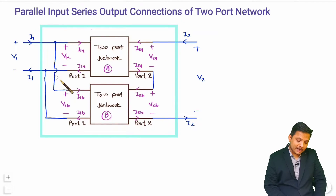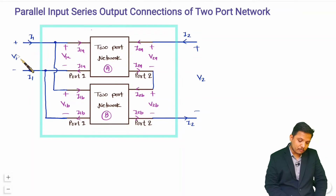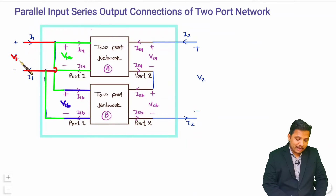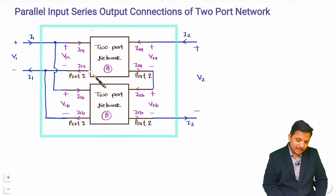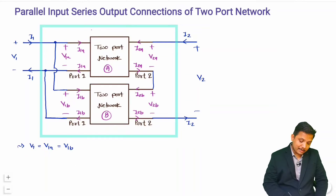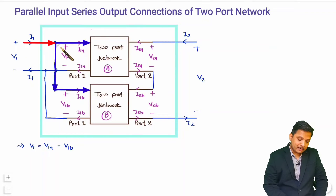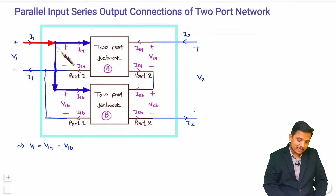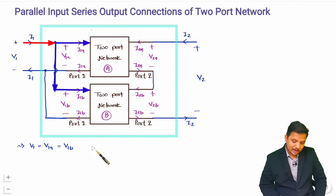Now to derive the equivalent parameters, we should write the voltage and current relations as per these connections. At the Input Side we have a Parallel Connection, so voltages are equal: V1 equals V1A equals V1B. In a Parallel Connection current gets divided, so applying KCL at the node, entering current I1 equals leaving currents I1A plus I1B.